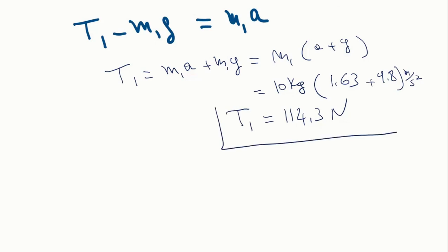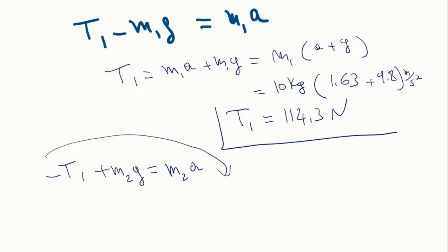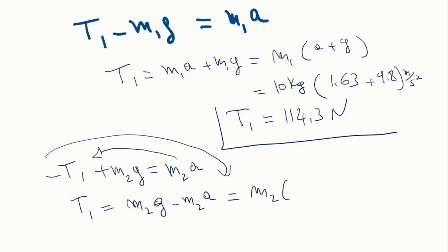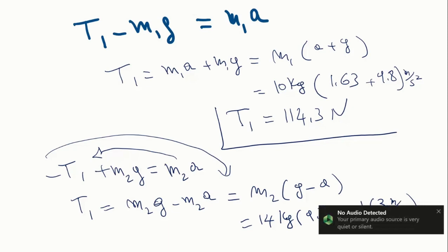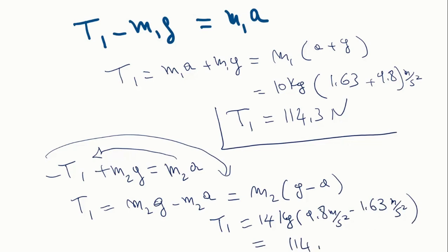We can verify using equation 2: negative T1 plus m2g equals m2 times acceleration. Rearranging, T1 equals m2g minus m2a, which is m2 times (g minus a). So T1 equals 14 kilograms times (9.8 minus 1.633) meters per second squared. Performing the calculation, we get the same result: 114.3 newtons, confirming our answer.